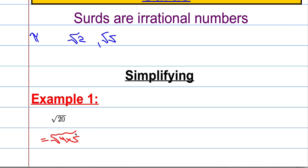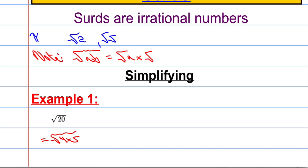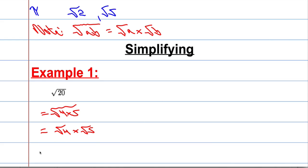This is very important. Because I can write 20 as 4 times 5, there's this rule — the surd of a product is equal to the product of the two surds. That's very useful. So I can say that root 4 times 5 is the same as root 4 times root 5. And we all know what root 4 is — square root of 4 is 2. So this is just the same as two lots of root 5. And that's the first one done.